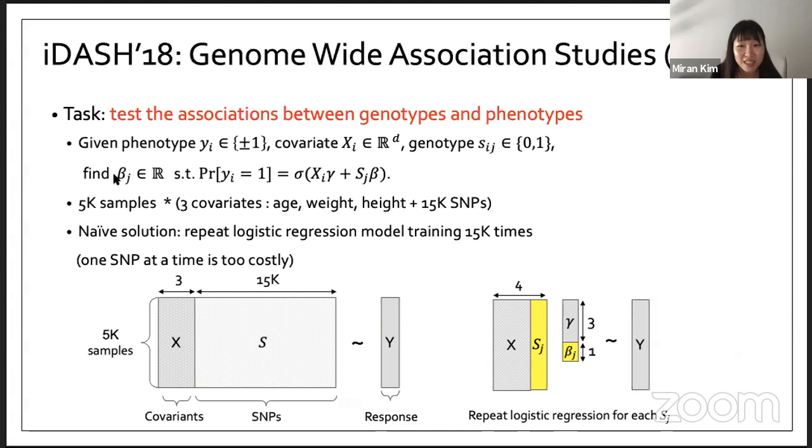In 2018, the task was to investigate the associations of the genotypes and phenotypes by building the logistic regression model. This means that on each SNP variant, we predict binary response y based on the predictor variables of the covariates including age, weight, and height, and the genotype S_j. We want to learn the beta coefficient of the corresponding SNPs and then see how different this beta coefficient is from zero. If it is significantly large, then we can say that the SNP at this position has a large effect on the disease.